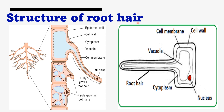The structure of root hair is very important for examination. Draw the diagram and label the parts. You can label: epidermal cell, then the outermost layer is the cell wall, next to the cell wall is the cell membrane, then below that is the cytoplasm, and then the vacuole inside. These are the main components to label.